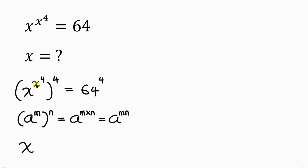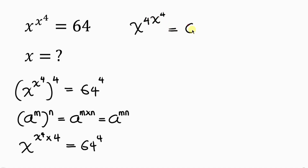So we have X to the power of X to the power of 4, times 4, equal to 64 to the power of 4. Simplifying, the left side becomes X to the power of 4 all raised to the power of X to the power of 4, because both powers multiply according to the law of indices.